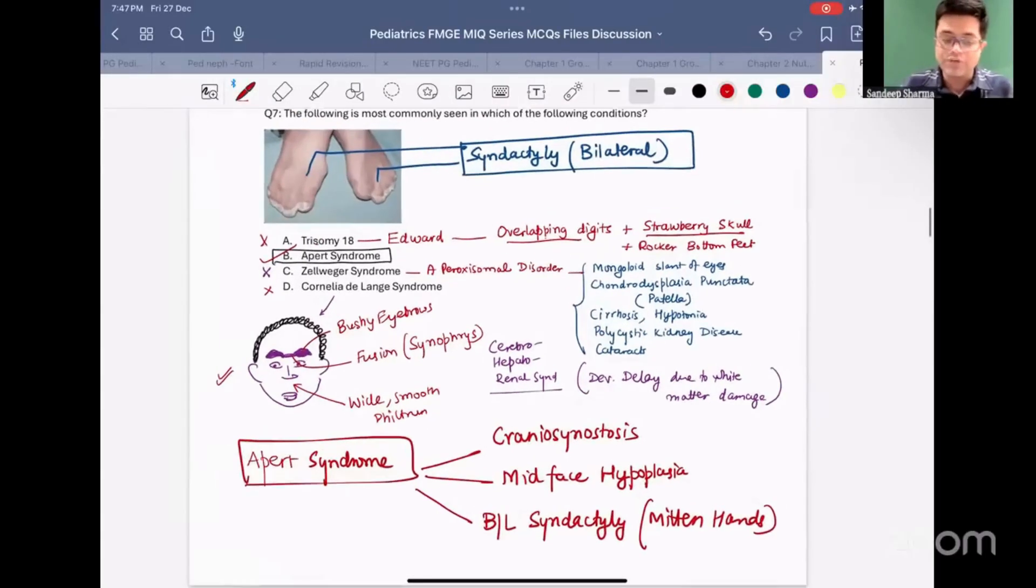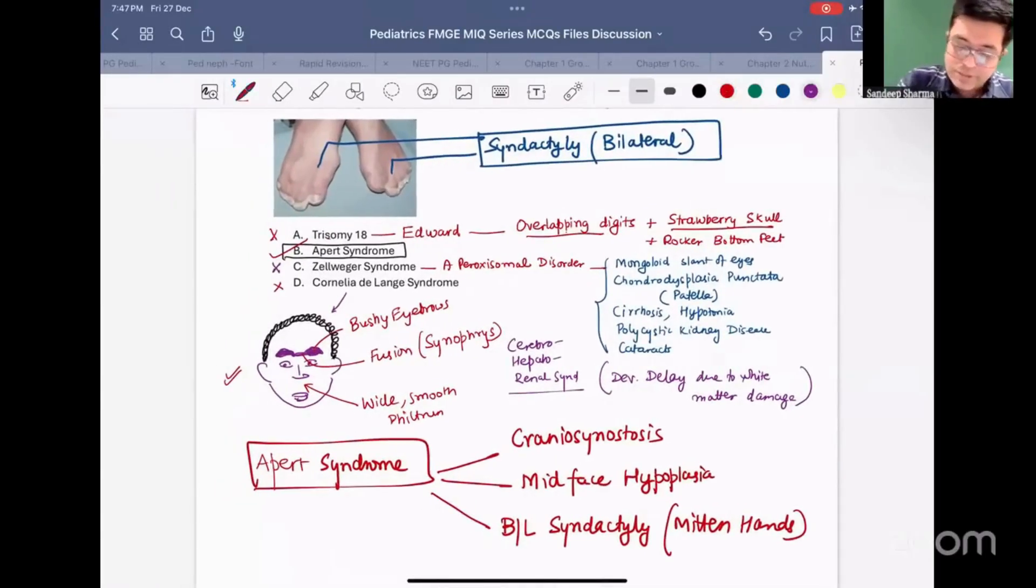And out of these, Apert syndrome is a past MCQ. And Zellweger syndrome is also a past MCQ. Other two options have been a part of other options asked in FMG exam. And so, you are supposed to remember them precisely. You may get a question on this. And that is why I have spent some time then you need to add it to your notes.